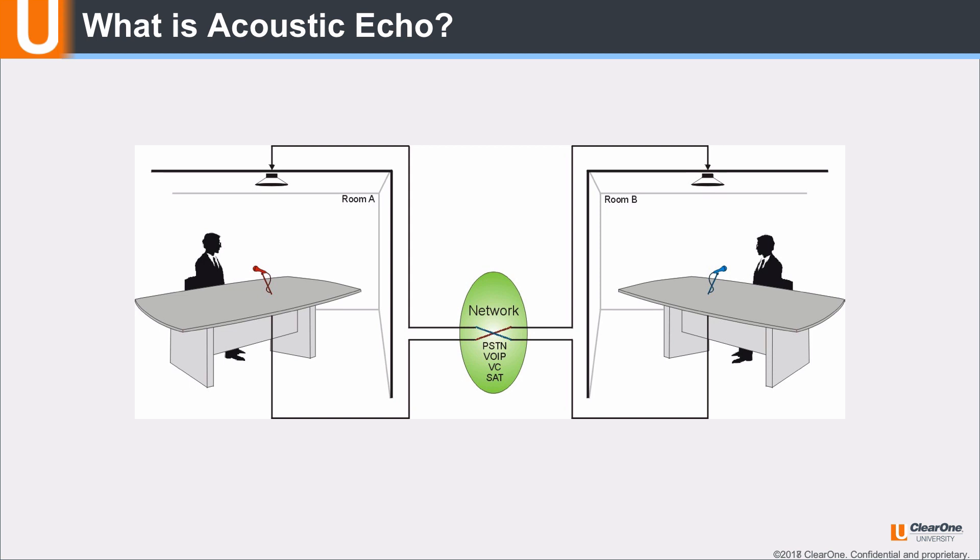Before we discuss acoustic echo cancellation, it is important to understand what acoustic echo is and what causes it. This diagram represents two audio conference rooms connected together via a phone line or some other type of network connection.